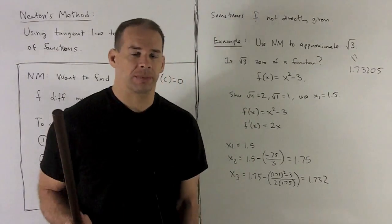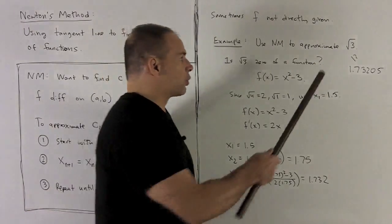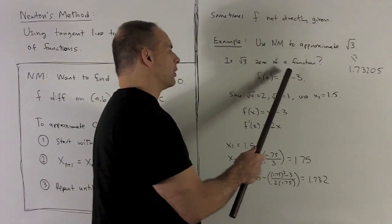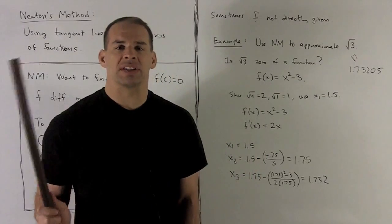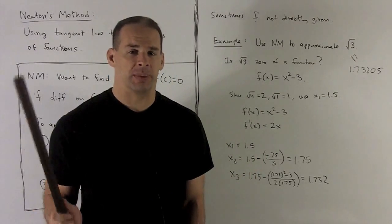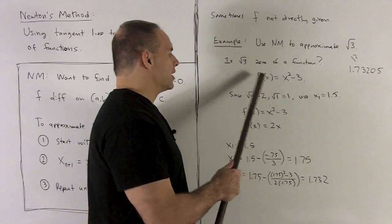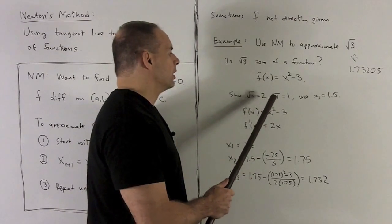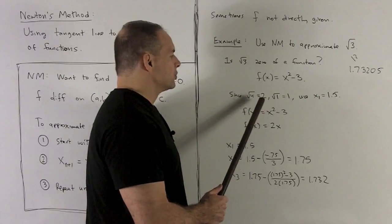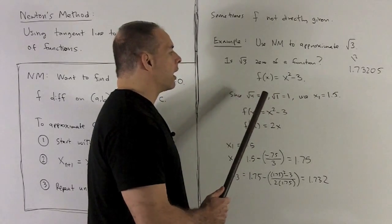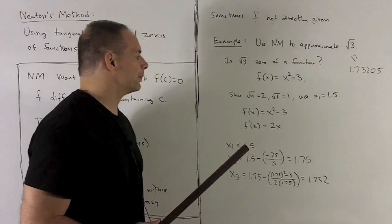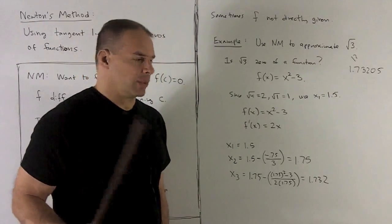To get a good guess for this, now note, we have the square root of 3. The other root of this equation is going to be minus square root of 3. So as long as I stay on the positive side, I should be fine. To get it a little bit nicer than that, let's start with, I know square root of 4 is 2, square root of 1 is 1. So the square root of 3 is going to be somewhere in there. So I'm going to start with x1 equal to 1.5. Let's see what happens.